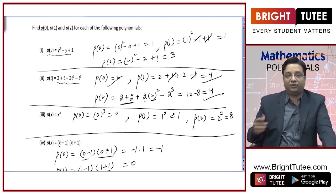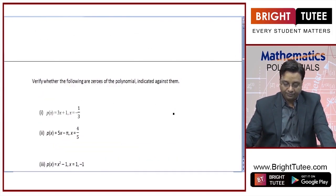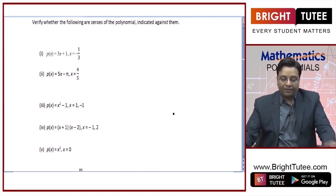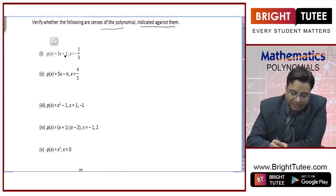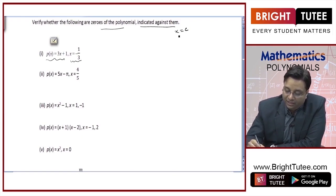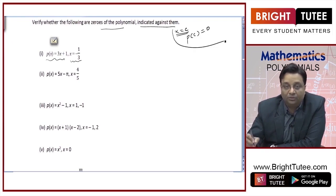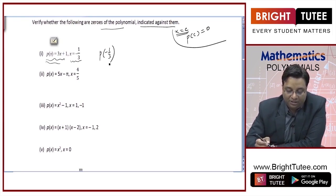This question was pretty simple because we just had to find values of these polynomials at 0, 1, and 2. Now, verify whether the following are zeros of the polynomial indicated against them. We need to verify whether x equal to negative 1 by 3 is a zero of p of x. It will be a zero of p of x if p of c becomes 0 — that is what we know.